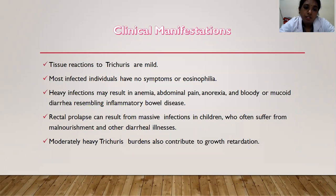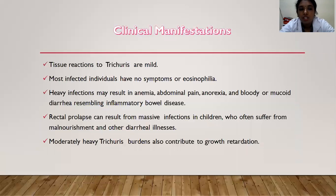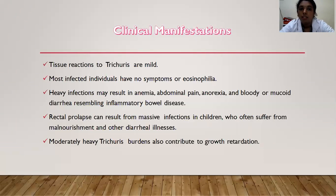Clinical manifestations of Trichuris: tissue reactions are mild since there is no migratory phase to skin or lungs. Most infected individuals have no symptoms or eosinophilia. Heavy infections may result in anemia, abdominal pain, anorexia, bloody or mucoid diarrhea resembling inflammatory bowel disease, and rectal prolapse. Rectal prolapse can result from massive infections in children who often suffer from malnourishment and other diarrheal illnesses. Moderately heavy Trichuris infections can also contribute to growth retardation.